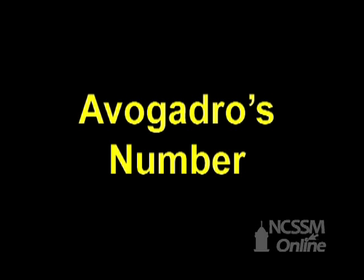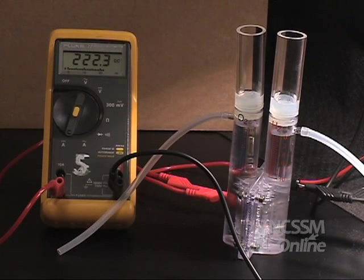What evidence do we have for the value of Avogadro's number? 6.02 times 10 to the 23rd. Here, we're going to demonstrate one way to find Avogadro's number experimentally.